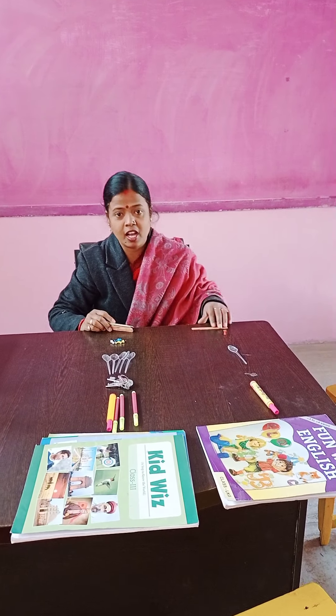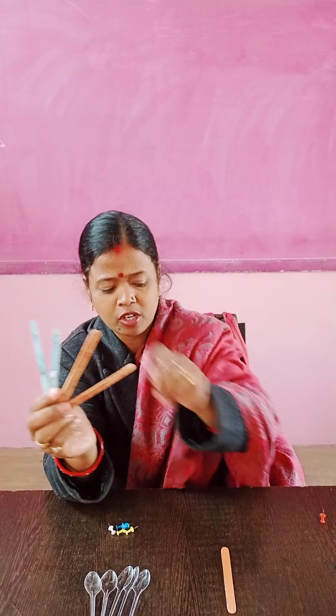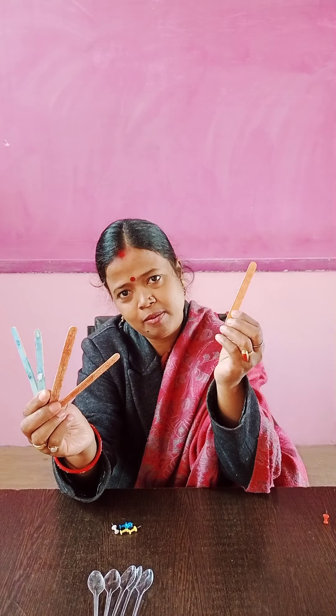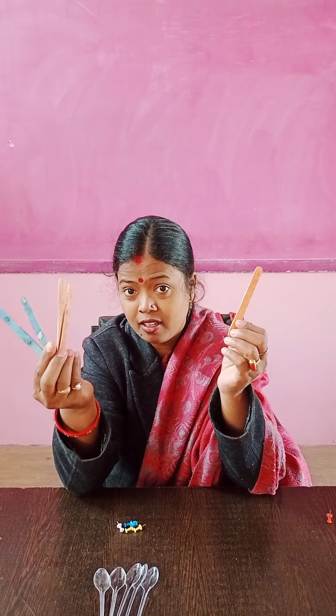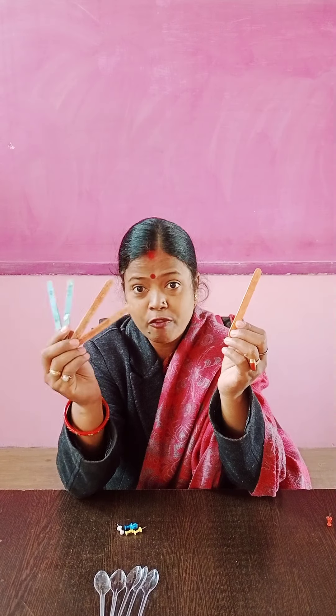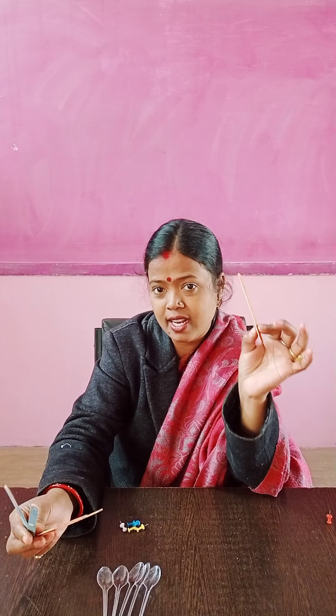Now what is this? Yeh dekho. Yeh kya hai? This is an ice cream stick. Mere ek haath mein kitna ice cream sticks hai? One, two, three, four. And in one hand only one ice cream stick. So which is more and which is less? Jis mein four hai — woh kya ho gya? More. And jis mein one hai — that one is less.